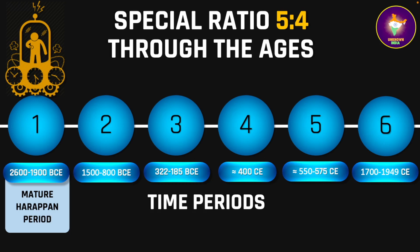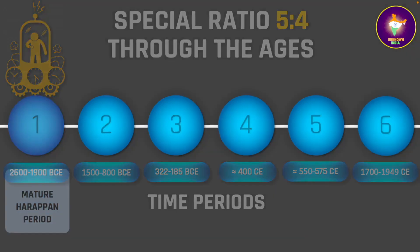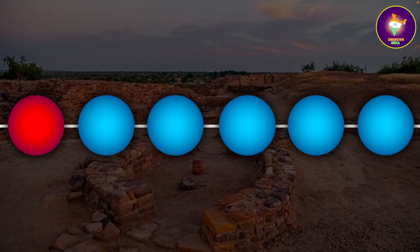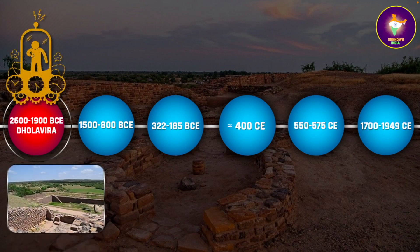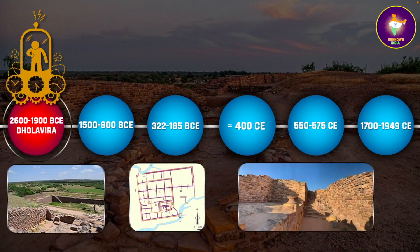As per the dating study by Jonathan Kenoyer, referenced in the credits section at the end of this video, we also travel to four sites of the Harappan or Indus Valley civilization. The first instance of the five to four ratio comes into play at Dholavira, the Harappan site in the Rann of Kutch in Gujarat.